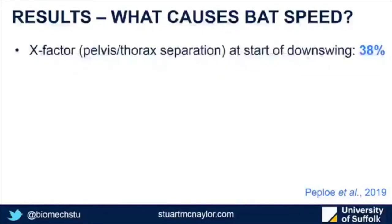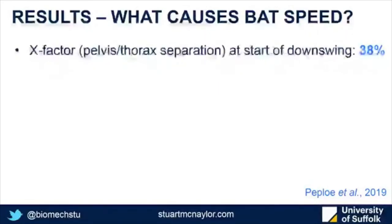The greater that separation, the greater the bat speed. This is because it allows batsmen to make more efficient use of the stretch-shortening cycle, stretching the active muscles during eccentric loading to increase muscular force and power output, leading to faster uncoiling during the downswing. We found similar separations to previous studies in tennis and baseball, but less than golf, probably due to the timing constraints of responding to an oncoming ball of unknown location and speed.